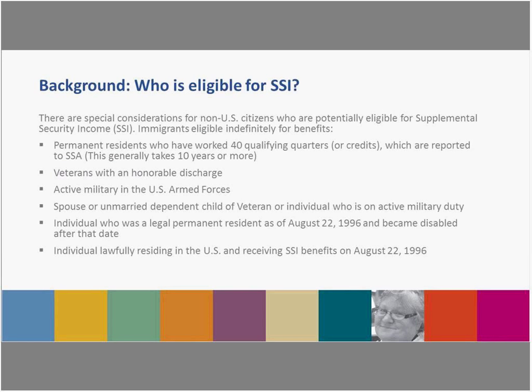This first slide covers who is eligible for SSI. There are special considerations for non-U.S. citizens. Those who can apply include permanent residents who've worked 40 qualifying quarters — about 10 or more years — which is probably not common within newly arrived refugees or asylees, but possible later. Also eligible: any veterans with honorable discharge, active military spouses or unmarried dependent children of veterans, individuals on active military duty, any legal permanent resident who came here as of August 22, 1996, and lawfully residing residents who are already receiving SSI benefits.